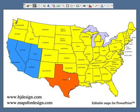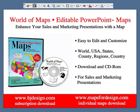Today we learned how to select a single state or select several states. This works with all of our maps — every map we have, whether it's a US, world, country, or county map, all work exactly the same. Thank you for joining us. This is the World of Maps, the editable PowerPoint maps for sales and marketing presentations. You can find our maps at bjdesign.com, which has a subscription download, and at mapsfordesign.com, where you can download individual maps.